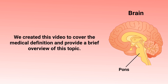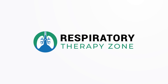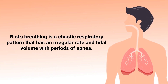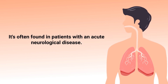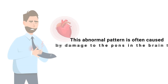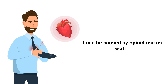Biot's breathing is a chaotic respiratory pattern that has an irregular rate and tidal volume with periods of apnea. It's often found in patients with an acute neurological disease. This abnormal pattern is often caused by damage to the pons in the brain due to a stroke or trauma, and it can be caused by opioid use as well.